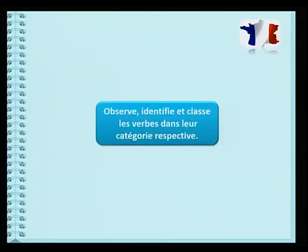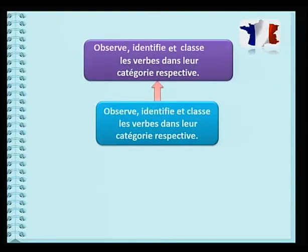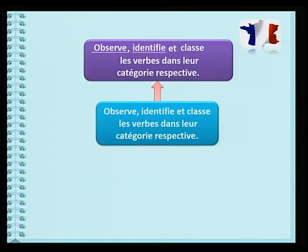Alors, une fois que tu as pu identifier les verbes de consigne, tu pourras numéroter les tâches à faire dans l'ordre. Mais pour cela, n'oublie pas de bien réfléchir avant d'agir. Laisse-moi voir si tu arrives à lire une consigne correctement. Alors, que fais-tu en premier? Très bien, tu lis du début à la fin. Observe, identifie et classe les verbes dans leurs catégories respectives. As-tu trouvé les verbes de consigne? Oui. C'est bien ça: Observe, identifie, classe.